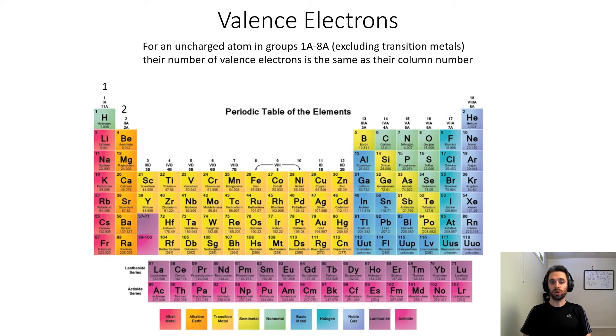Anything in group 2A, same situation: two valence electrons. Any other electrons are core electrons. For example, magnesium would have two valence electrons and ten core electrons.